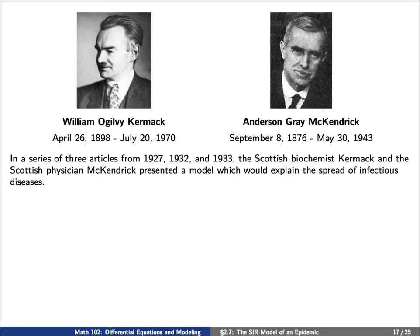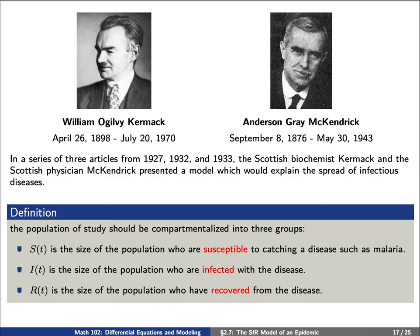Let's give some definitions now. Our population will be compartmentalized into three groups. First, we have S, the size of the population who are susceptible to catching a disease such as malaria. Next, there's I, which is the size of the population who are infected with the disease. And third, there's R, the size of the population who have recovered from the disease.